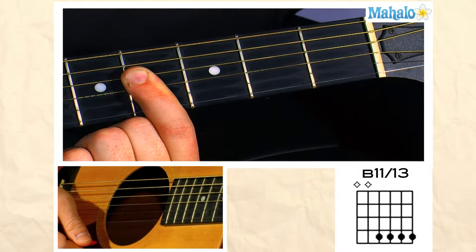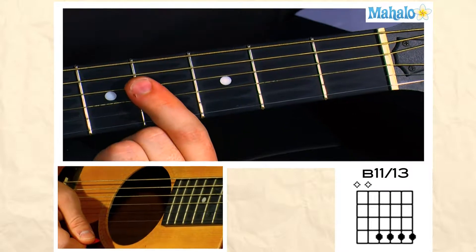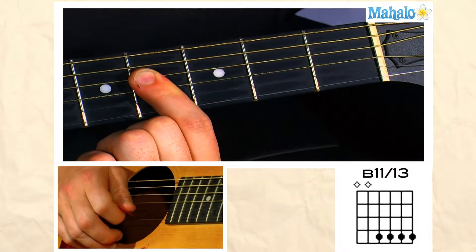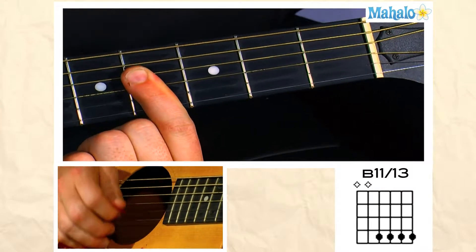Pretty easy, we're going to use our first finger on the fourth fret, starting from the D string, hold it down on the G string, and the B string, and the E string.